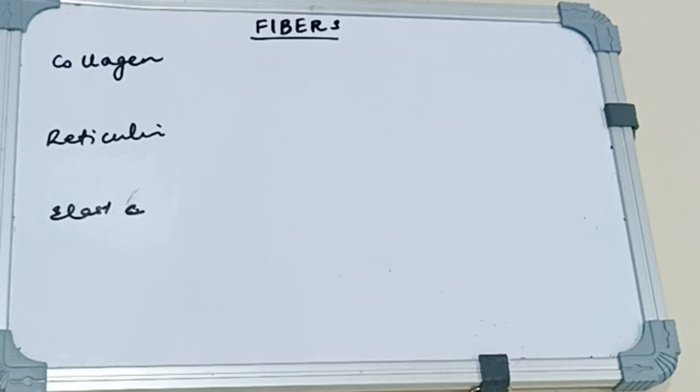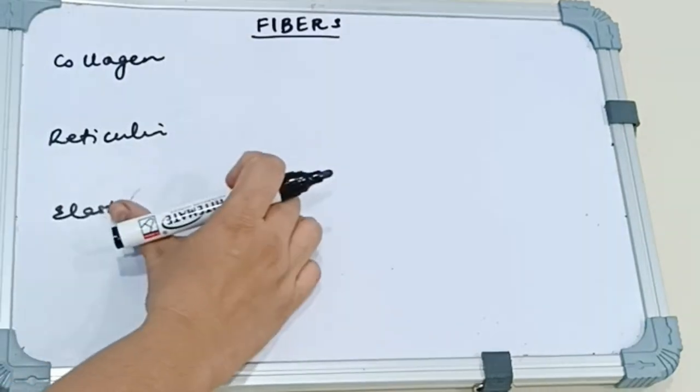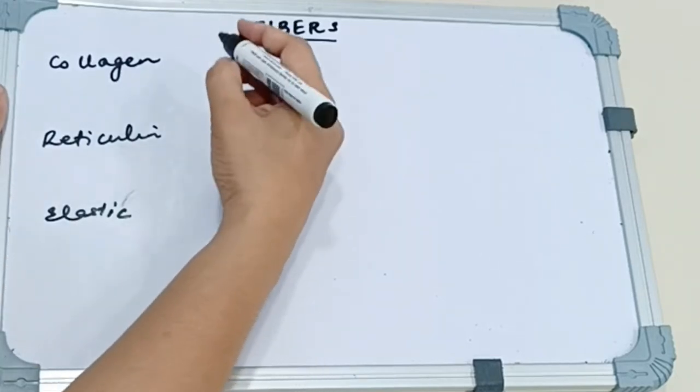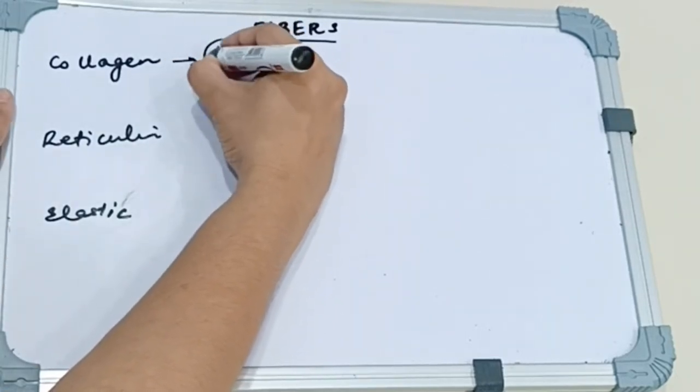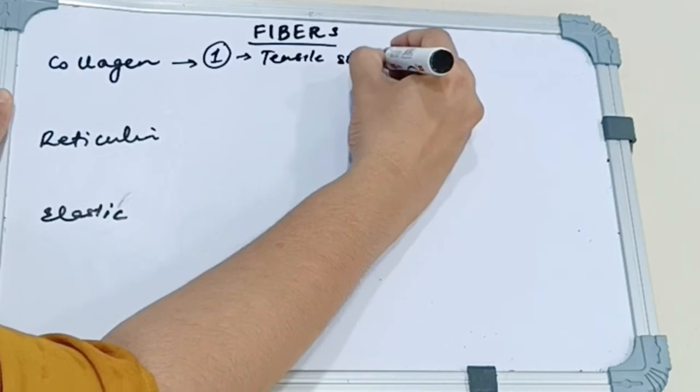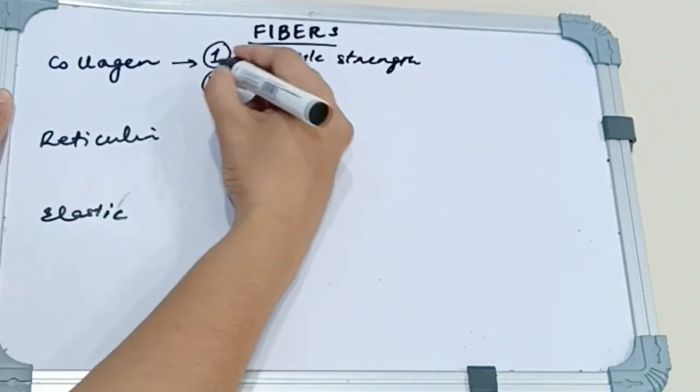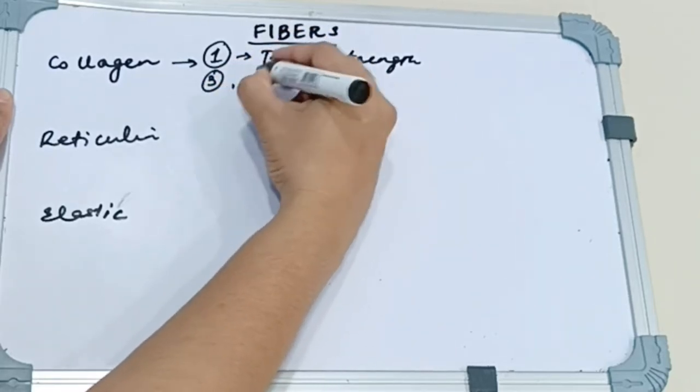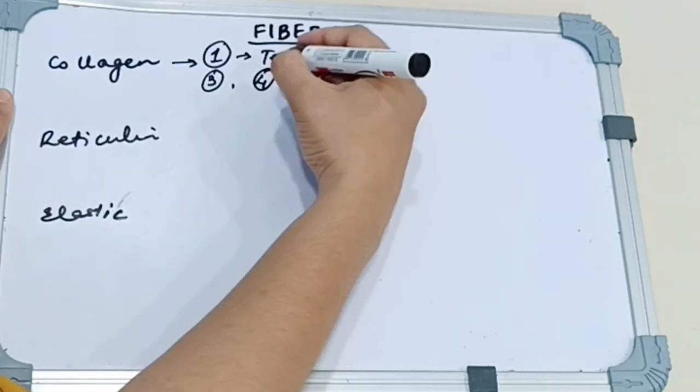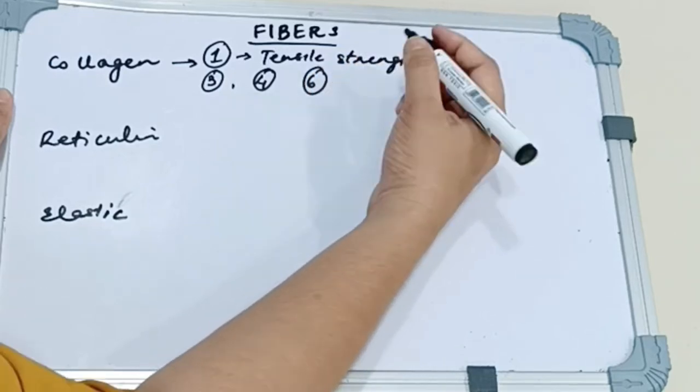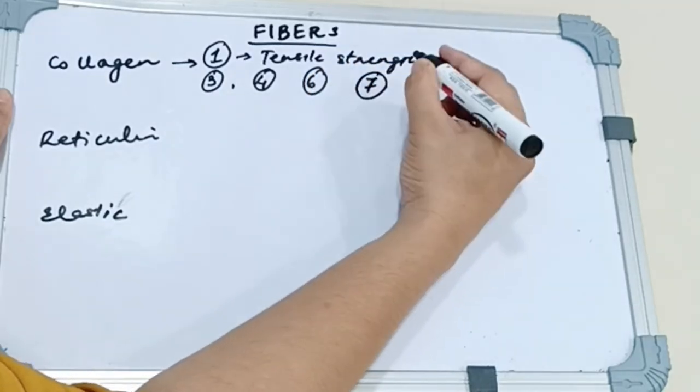Coming to the extracellular compartment of the gingival connective tissue, we have three types of fibers: the collagen fibers, reticular fibers and elastic fibers. The collagen fibers what we see is predominantly type 1 collagen which provides the tensile strength. We also see the presence of type 3 which is the fetal collagen fiber and is important in wound healing. Type 4 which is present in the basement membrane. Then we have type 6 which is present in the blood vessels.